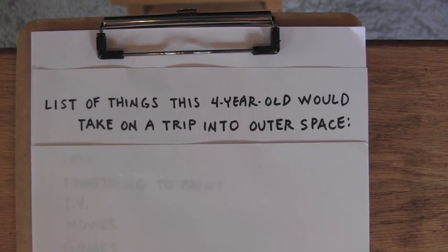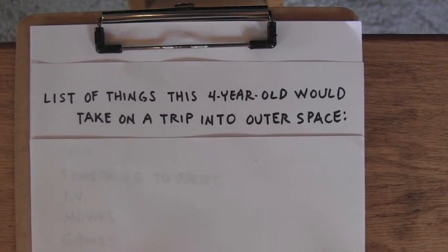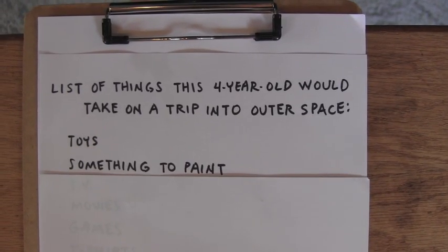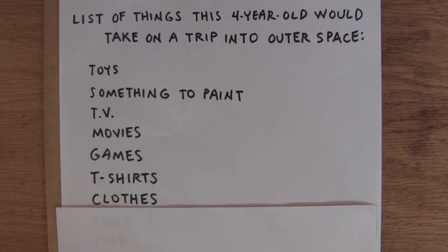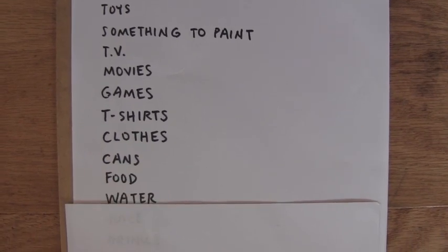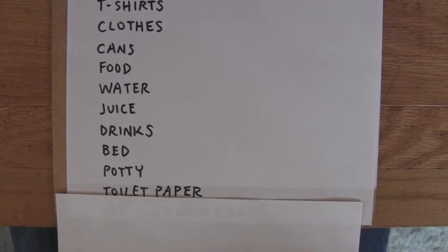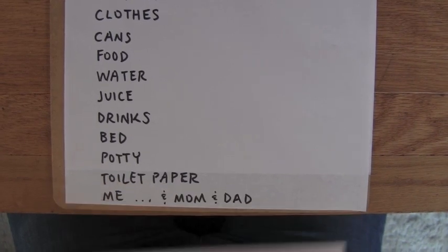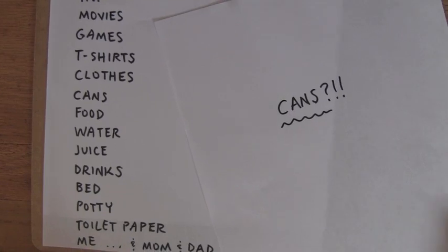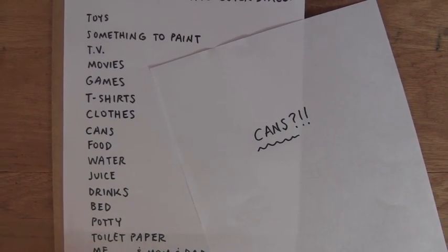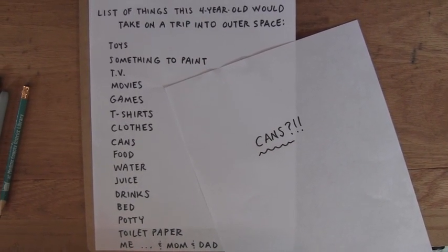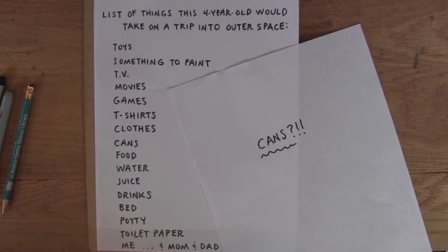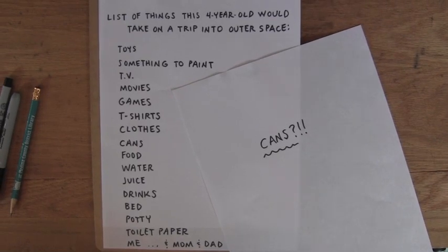What would you take? Toys, something to paint, TV, movies, games, t-shirts, clothes, cans, food, water, juice, drinks, bed, potty, toilet paper, and me, and mom and dad. What kind of cans? Meat cans. Like soup and vegetables and spaghettios and stuff. Okay. Yeah. Meat cans. Right. For lunch. For lunch. And then dinner you'd have out, maybe wherever you're at. Yeah. Okay.